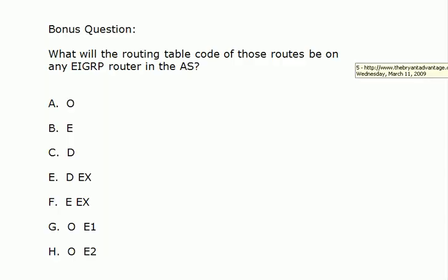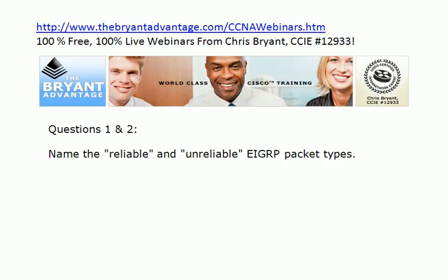Back to questions one and two: name the reliable and unreliable EIGRP packet types. Hello packets are obviously very important, but they are considered unreliable — as are acknowledgement packets. The reliable EIGRP packets are update, query, and reply.